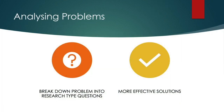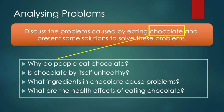Now we need to analyze the problem. To analyze, you need to break down the problem into research style questions and then find information. Breaking down a problem is important because it helps us to avoid jumping too quickly to solutions that might only address the impacts and not the causes. So you need to start thinking about the root causes of the problem. Taking the essay question on chocolate as an example, you need to ask questions such as: Why do people eat chocolate? Is chocolate by itself unhealthy? What ingredients in chocolate cause problems? What are the health effects of eating chocolate? And so on. This is how you analyze a problem.